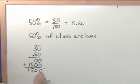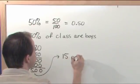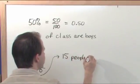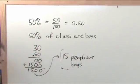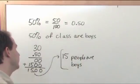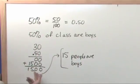As you know, zeros after a decimal point can be dropped. So the answer is 15. 15 people are boys in the class. Really, all you did was multiply by 0.50 there and you get a number that's 15.00.